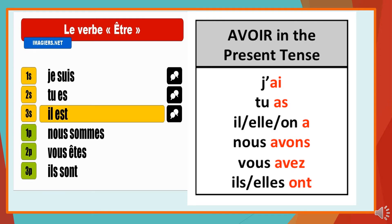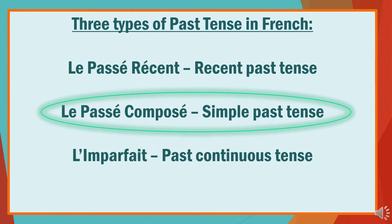The actual topic for today is the past tense. You need to know that there are three past tenses in French: the recent past — le passé récent, the simple past — le passé composé, and the past continuous or imperfect tense — l'imparfait. Today we are focusing on the simple past tense, which is called le passé composé.